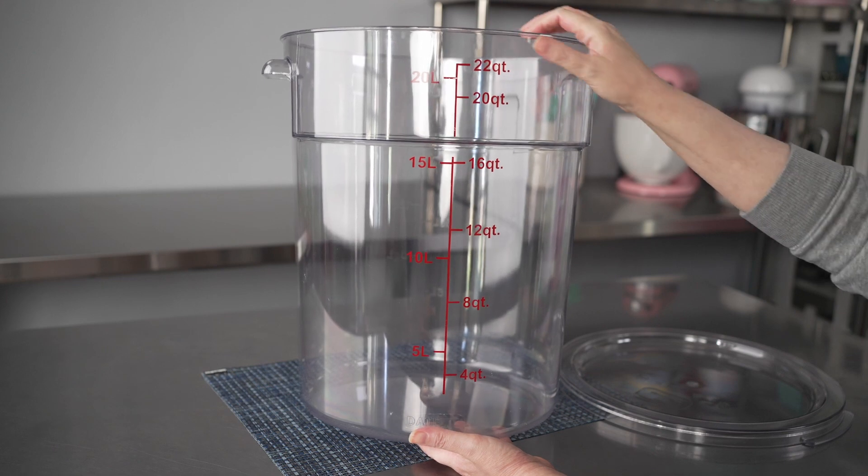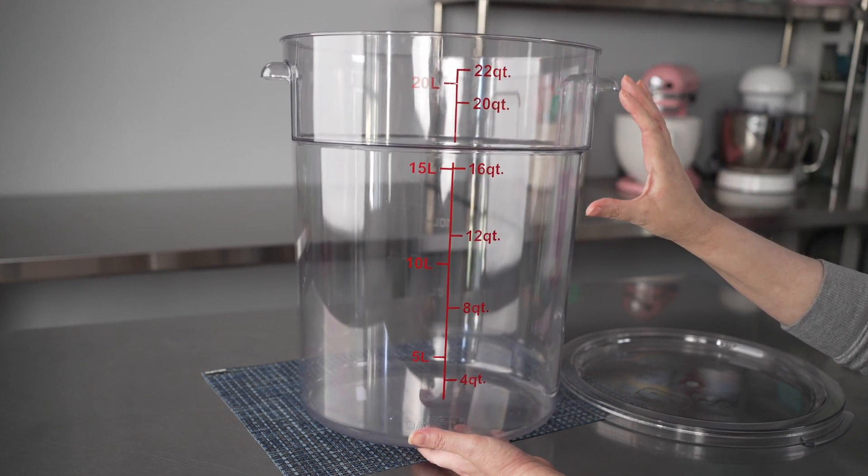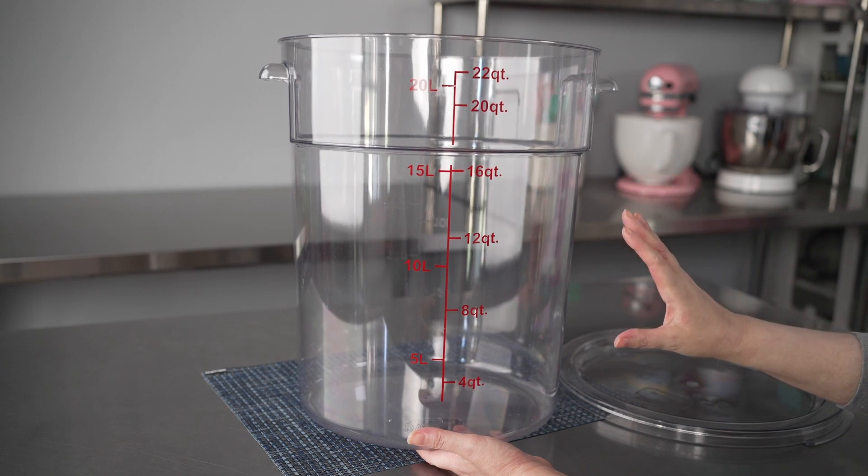They make fantastic containers because it gives you that nice little volume measure on the side to check your par levels and make sure that you're well-stocked on certain items.